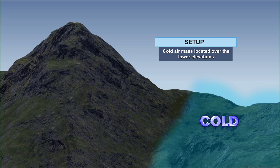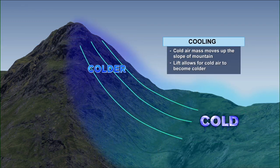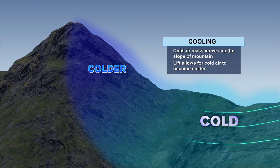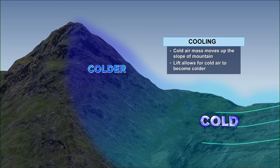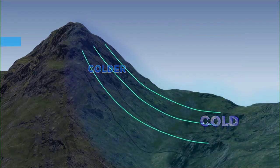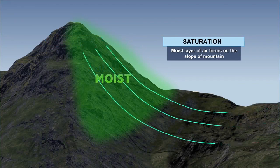Next we have upslope fog. Of course, you're going to be talking about mountainous regions or higher elevations. A cold air mass is located over the lower elevations — that's where the cold air is pretty much trapped across the area. Then that cold air starts to lift up the slope of the mountain, becoming even colder.